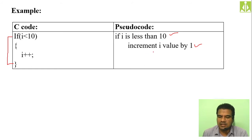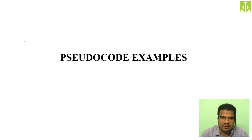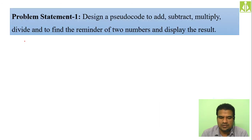When you read the pseudo code, you understand exactly what the code does. For example: if i is less than 10, increment i value by 1. Whenever i value is less than 10, we are incrementing i value by 1. This is exactly the meaning of the code. So, whatever examples we have seen for algorithms, we will try to write the same pseudo codes.